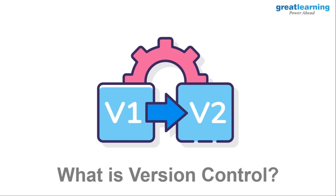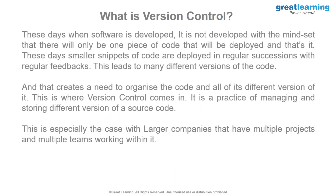So what is version control? As the name suggests, it's about controlling different versions of a thing. In software development, you write source code which is used to create software. You will definitely have multiple versions of a software, and to have those multiple versions, you'll need multiple versions of the source code — and that is where version control comes in.